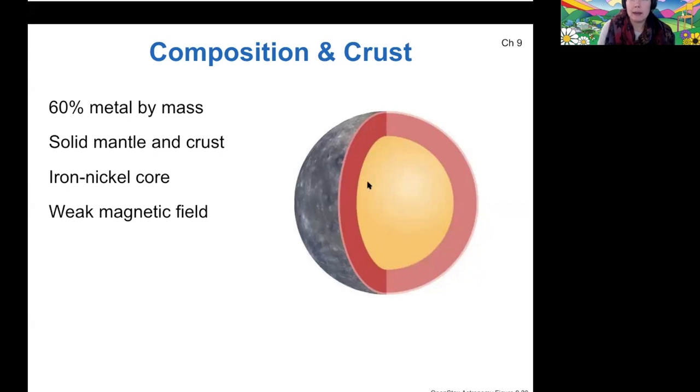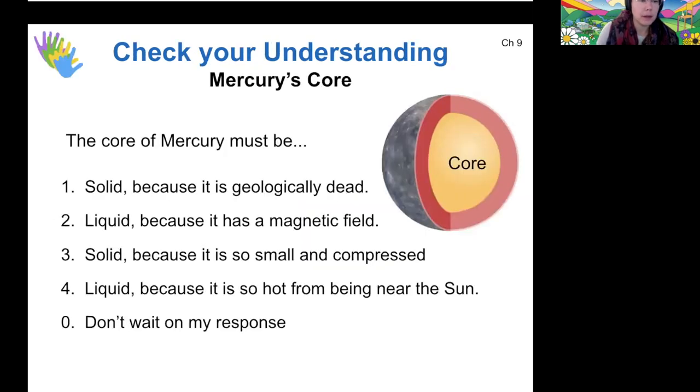Because it has a metallic core and it rotates, it can produce a very weak magnetic field, but this is nowhere near the strength of the magnetic field of Earth. So question for you, what else must be true about its core? Okay, I see a split between two and four, which makes sense. So yes, the core must be a liquid in order to support having a magnetic field. There needs to be some sort of fluid that can conduct electricity, and that's how a magnetic field is created, thinking back to that video about electromagnets that I showed you. It's not necessarily liquid simply because it's hot from being near the sun, but we know it must be liquid because it has a magnetic field. The core is liquid because it hasn't completely finished cooling yet.